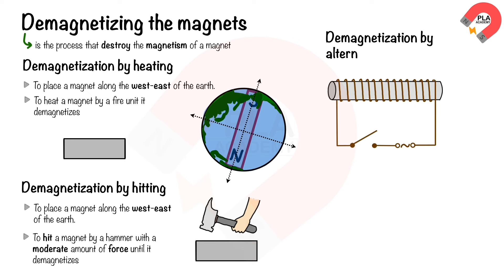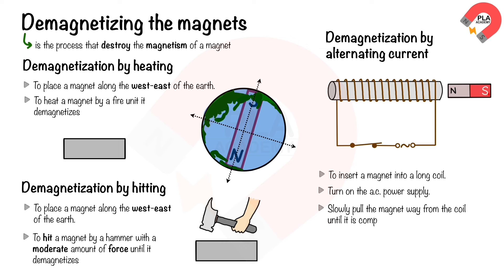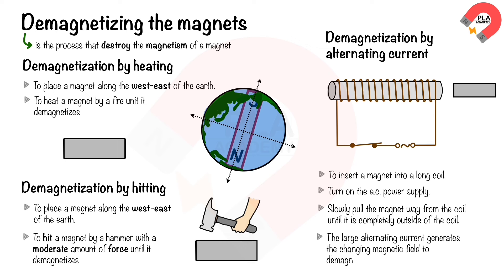Demagnetization by alternating current: insert a magnet into a long coil, turn on the AC power supply, and slowly pull the magnet away from the coil until it is completely outside. The large alternating current generates a changing magnetic field to demagnetize the magnet. Do not keep the magnet inside the coil, as this cannot fully demagnetize it.